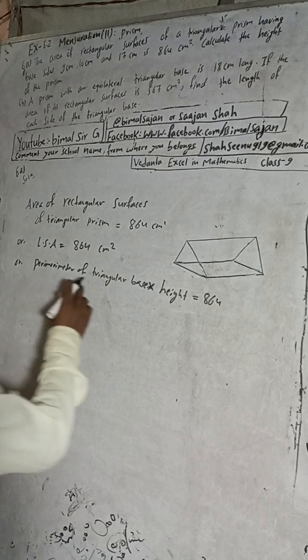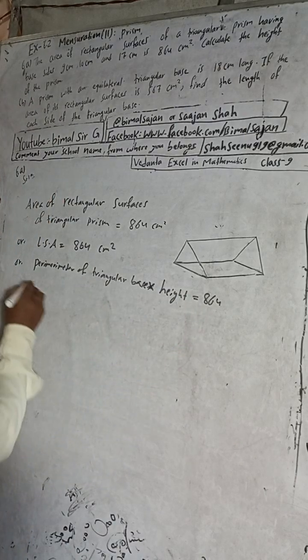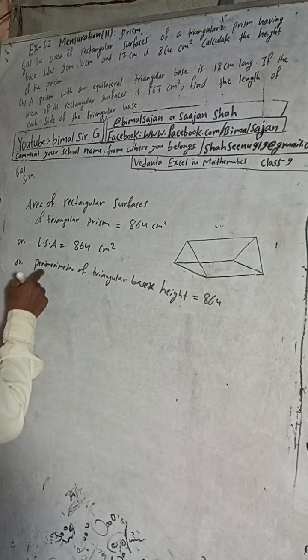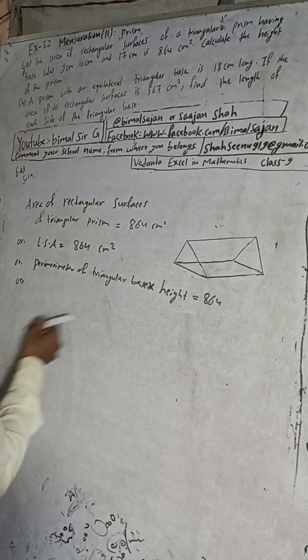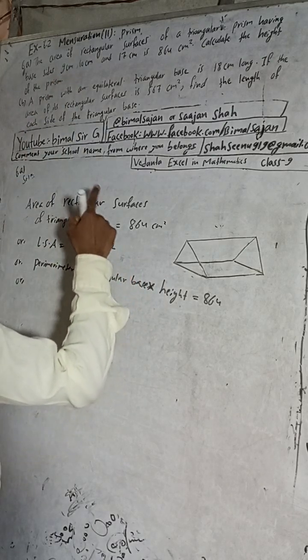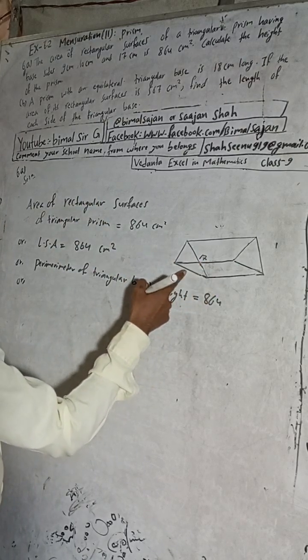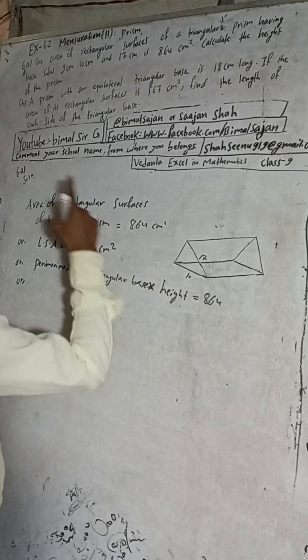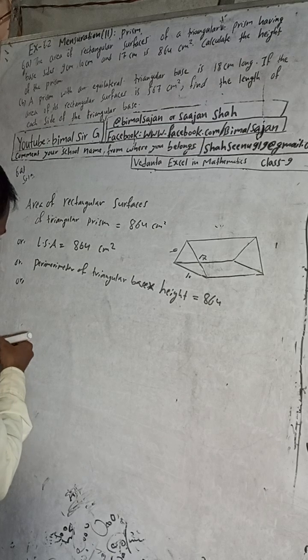Perimeter of the triangular base means all sides are given. The base sides are 9 cm, 10 cm, and 17 cm. Suppose this is 17 — the bigger one — this side is 10, and this one is 9. You can consider any arrangement; it's a clear figure.